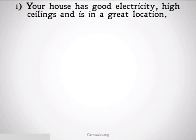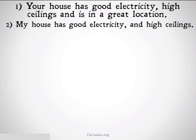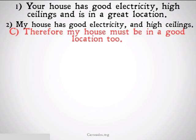Let's take a look at some examples. Your house has good electricity, high ceilings, and is in a great location. My house has good electricity and high ceilings. Therefore, my house must be in a good location too. This is a fallacy of weak analogy because good electricity and high ceilings don't actually affect the location of one's house. It's not okay for us to draw an analogy between your house and my house.